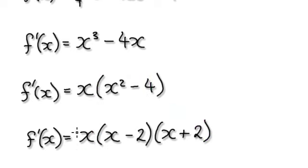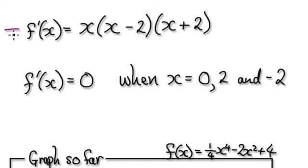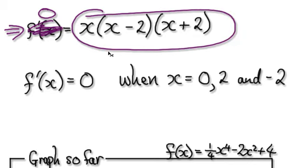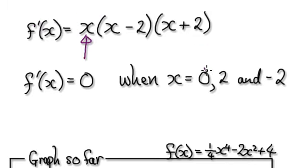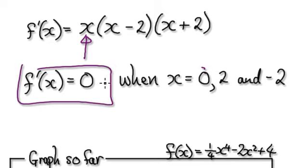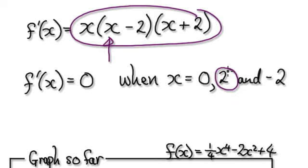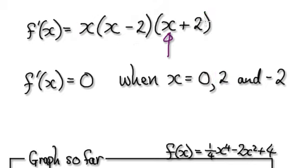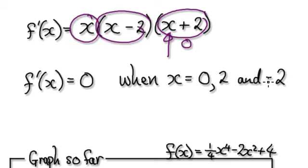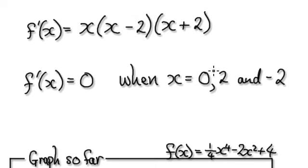This x here is this x here. When will the gradient be 0? Set this thing here to be 0. When will this be 0? Well, this would be 0 when x is 0, so f prime of x is 0 when x is 0. When will this whole thing here be 0? If you put positive 2 in here, then this whole thing will be 0. And if you put negative 2 in here, then it will also be 0.